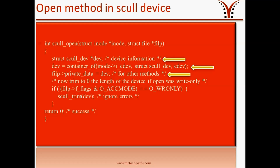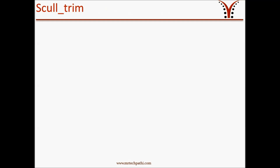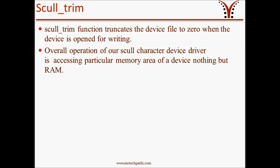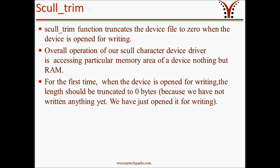The last operation we are performing in the open function is skull_trim. What exactly does skull_trim do? skull_trim is a function that truncates the device file to 0 when the device is opened for writing. Remember that the overall operation of our skull character device driver is accessing a particular memory area of a device — nothing but RAM. For the first time, when the device is opened for writing, the length should be truncated to 0 bytes because we have just opened it for writing.